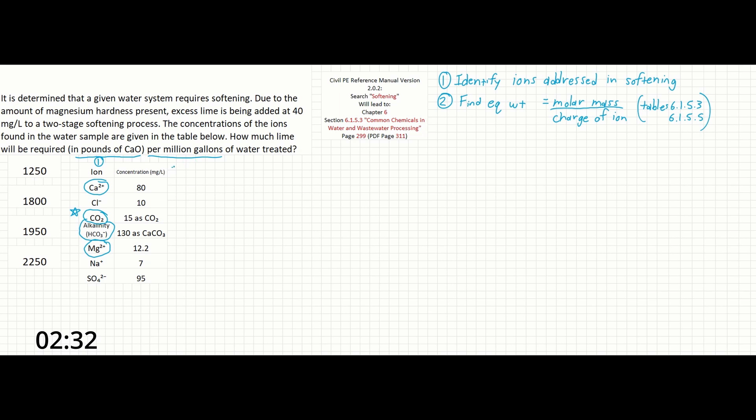So looking at the manual, the equivalent weight of calcium, Ca2+, is 20. The equivalent weight of carbon dioxide, CO2, is 22. The equivalent weight of alkalinity, HCO3- is already in mg per liter as CaCO3.